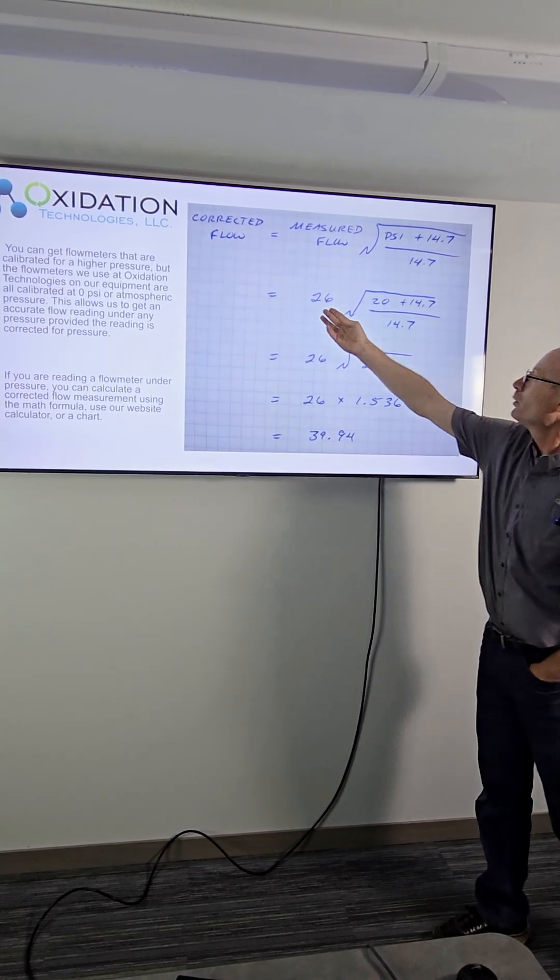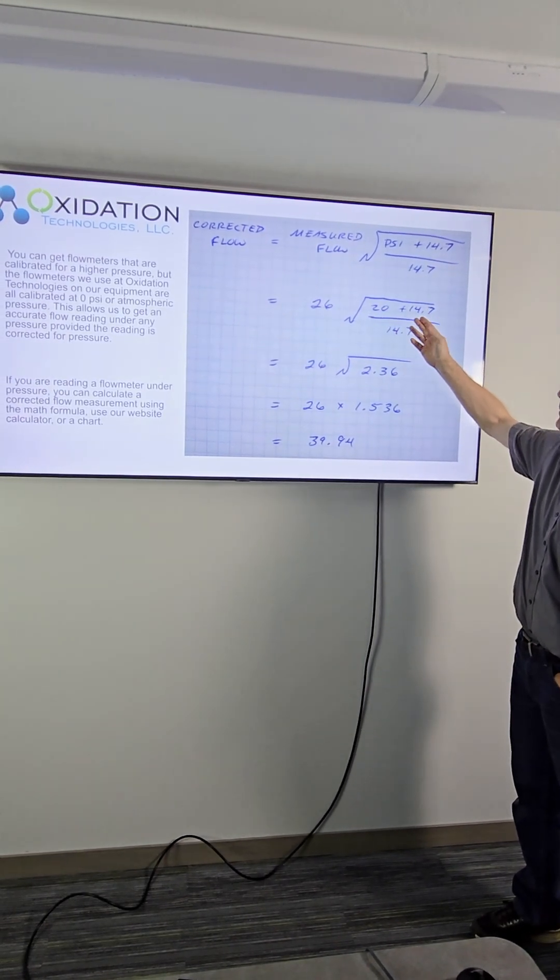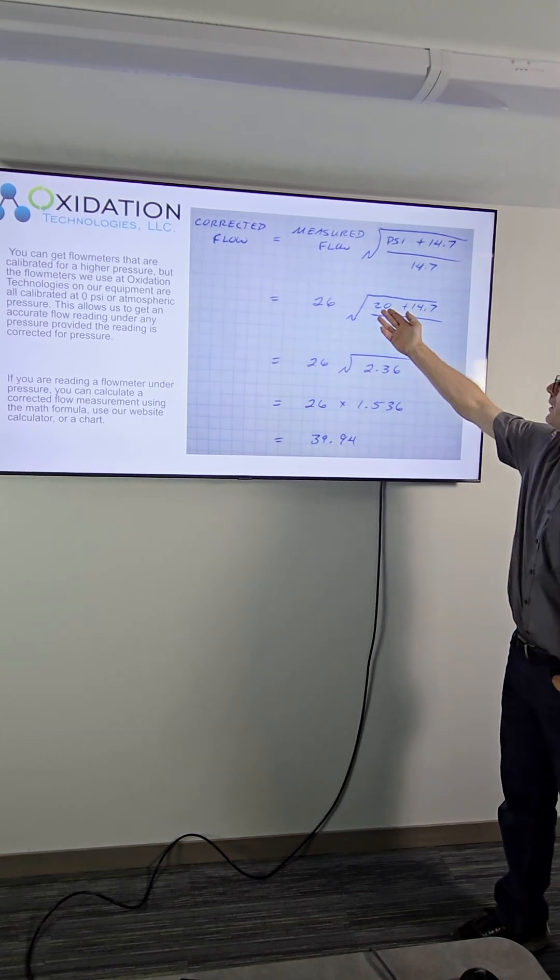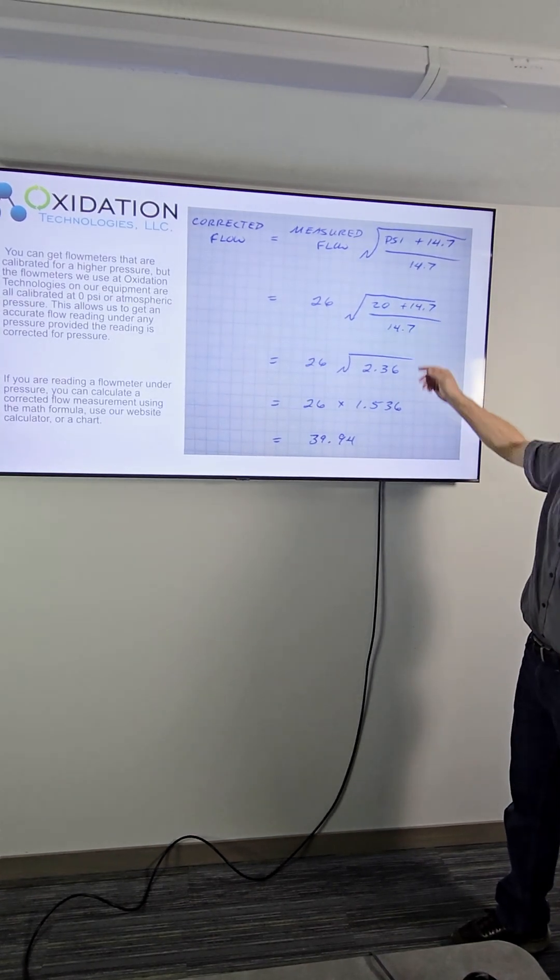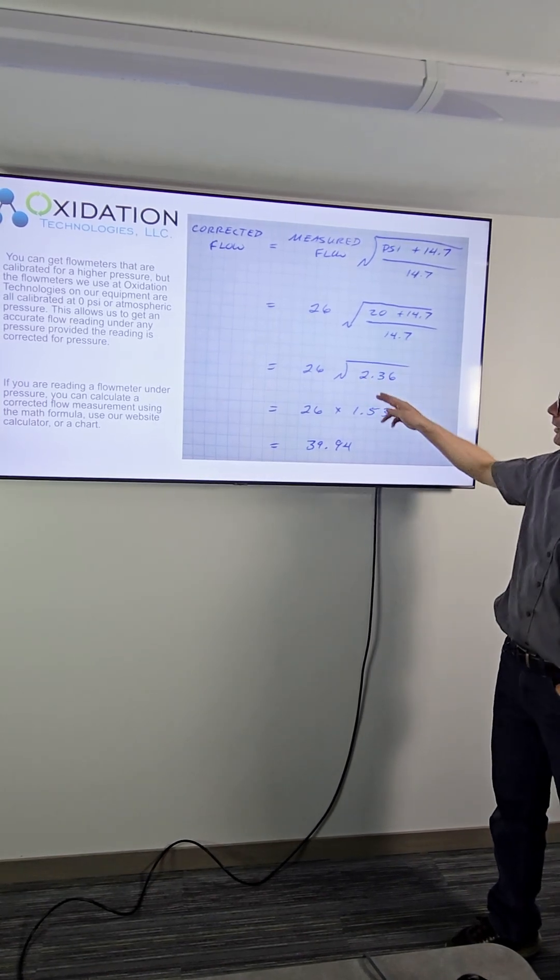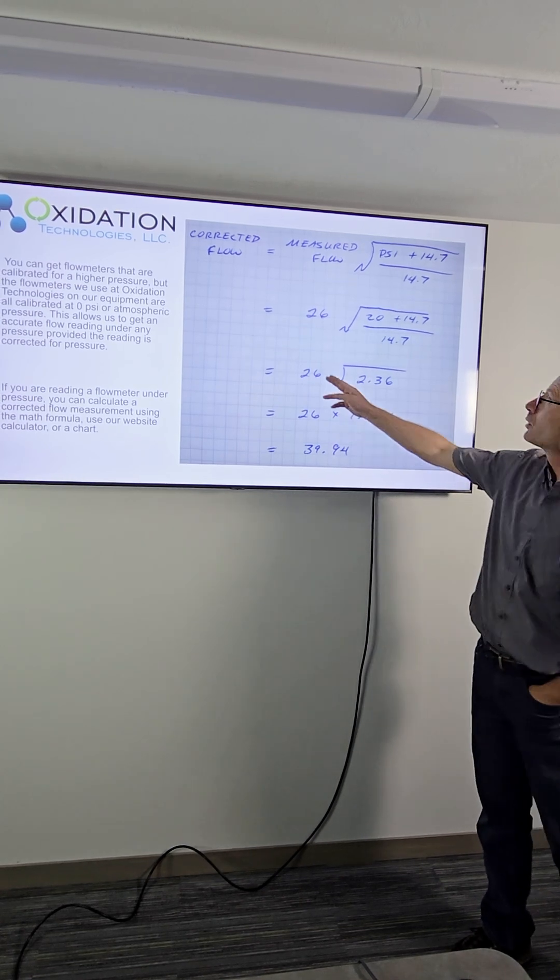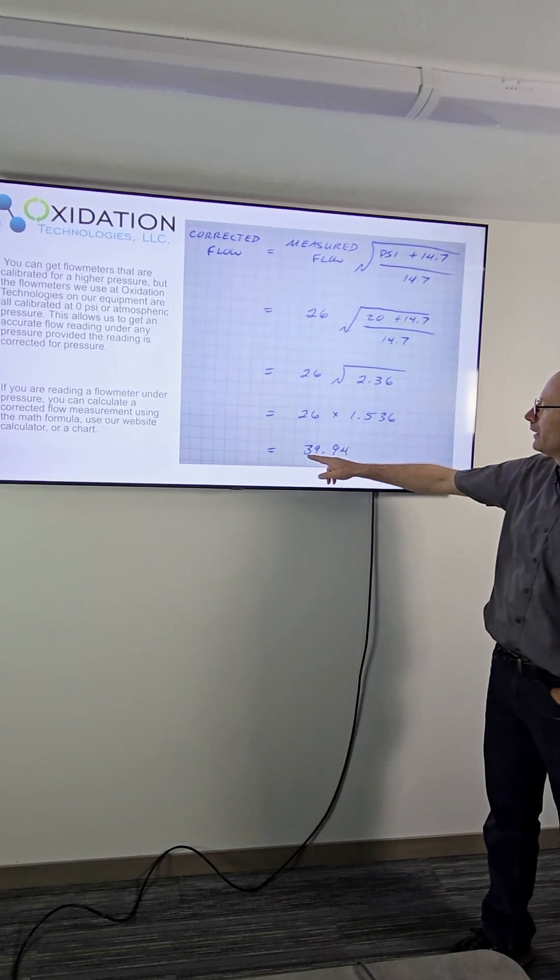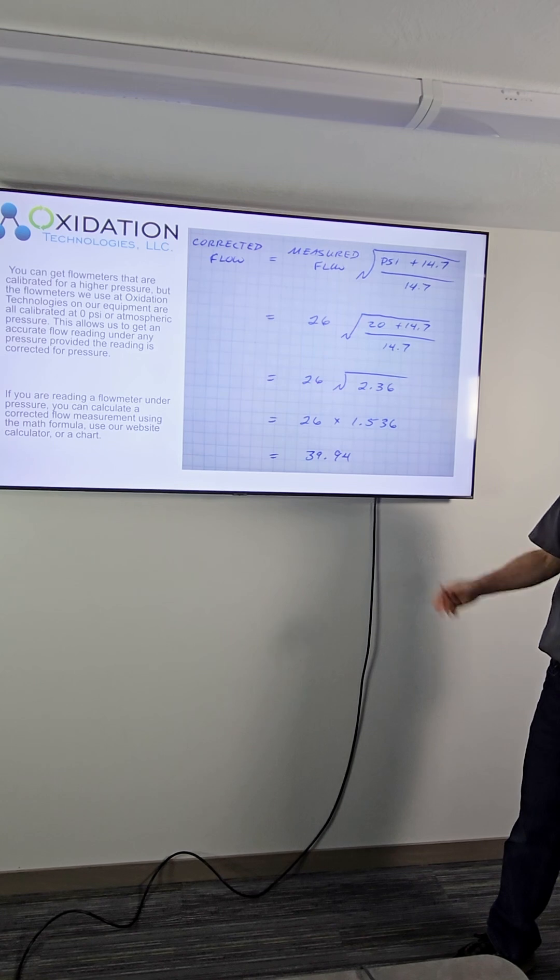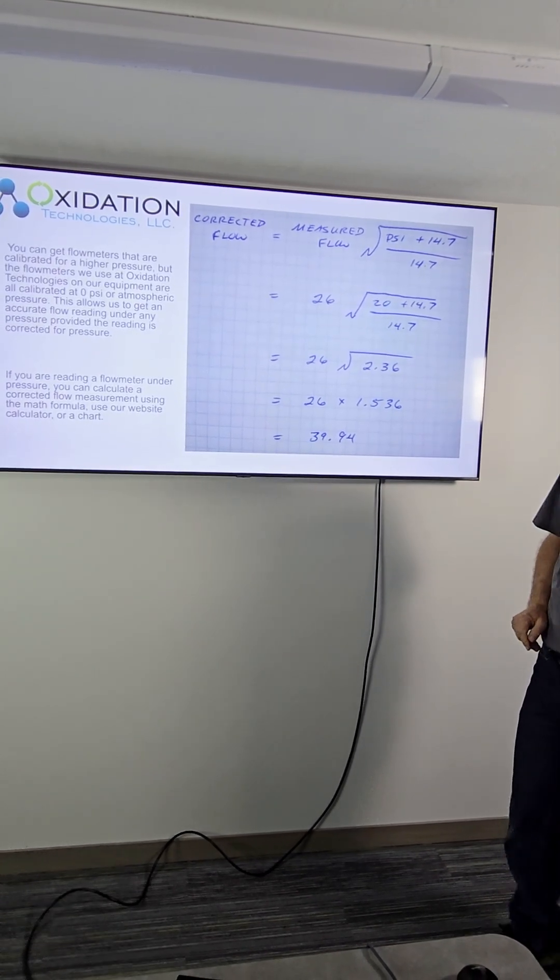So we measured 26. We put in it was at 20 psi. If you run the calculation, 20 plus 14.7 divided by 14.7 you get 2.36, take the square root of that 1.536, multiply that by the measured flow and you get 39.94 which is about exactly what it was showing on that second flow meter.